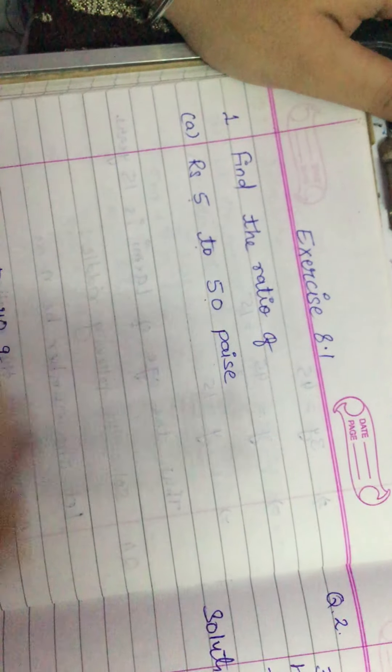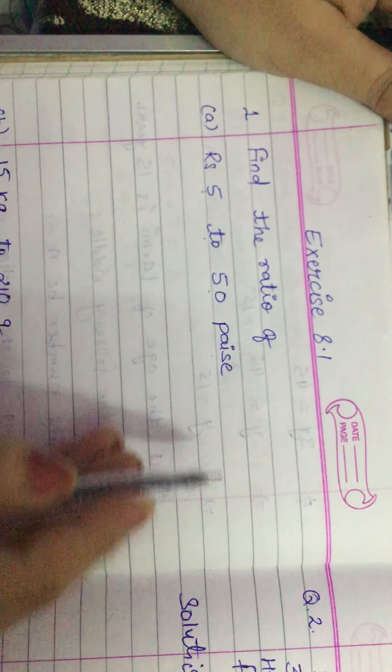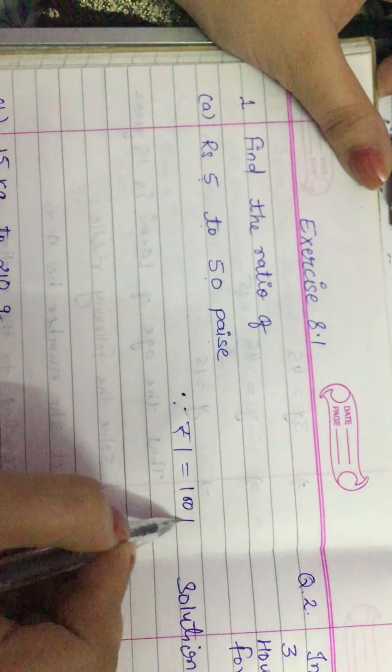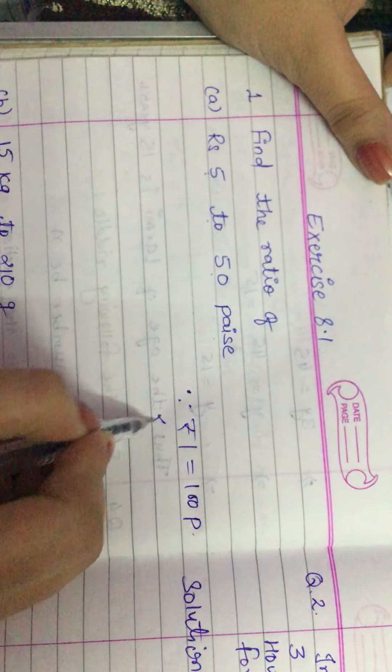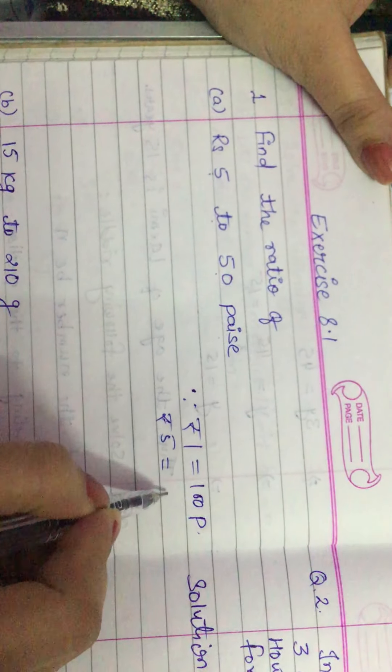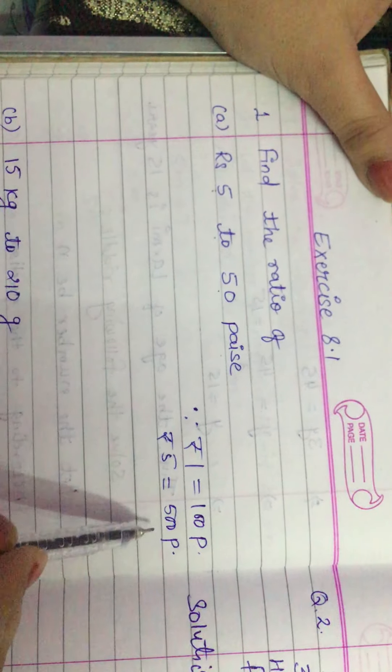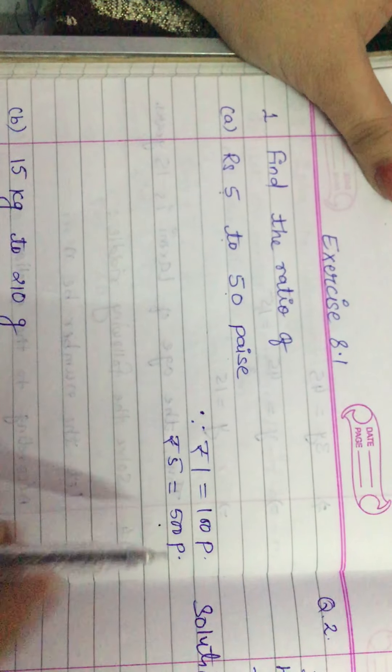We know that rupees 1 is equal to 100 paisa, so rupees 5 is equal to 500 paisa. Now rupees 5 we can write as 500 paisa.